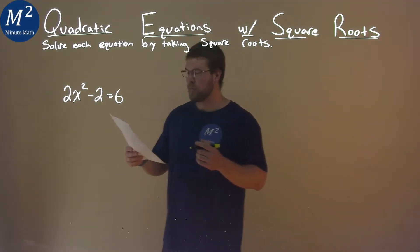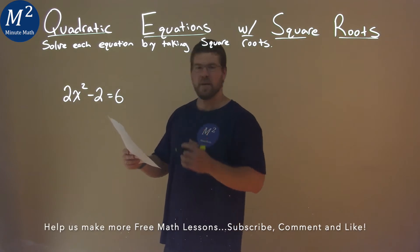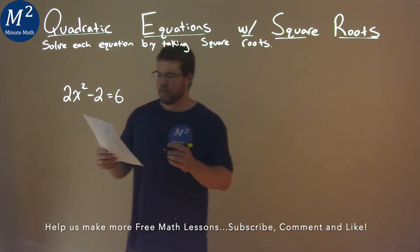We're given this problem right here. 2x squared minus 2 equals 6, and we need to solve this by taking some square roots.